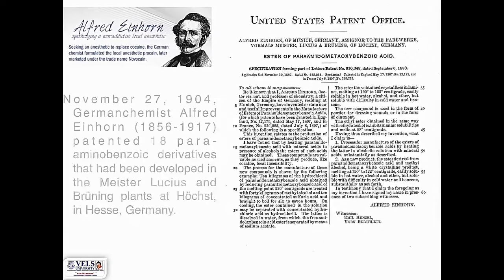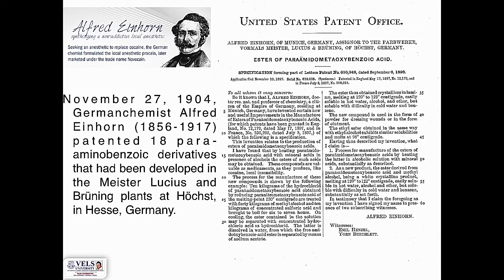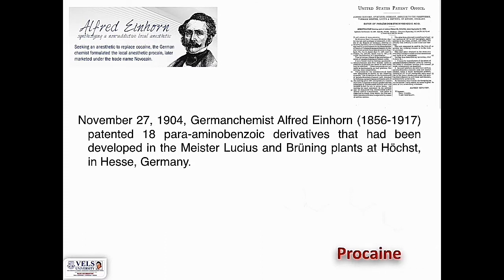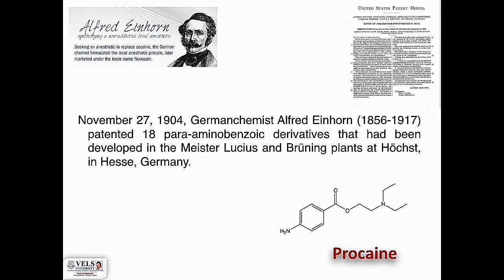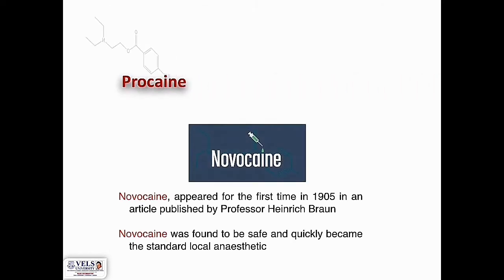N. Hahn went on to patent nearly 18 esters of para-aminobenzoic acid as procaine derivatives, which were subsequently marketed. Procaine was marketed under the name Novocaine and appeared for the first time in 1905 in an article published by Professor Enrich Braun. Novocaine was found to be safe and quickly became the standard local anaesthetic.